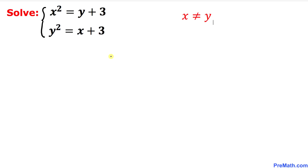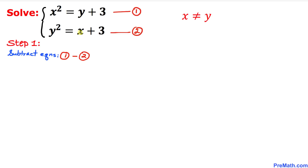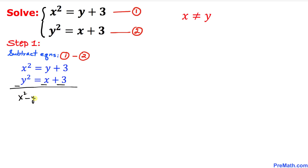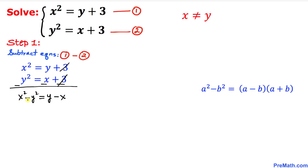Let's go ahead and get started with the solution. We'll call the first equation number one and the second equation number two. Let's go ahead and subtract equation two from equation one. Changing the sign, we get x squared minus y squared equal to y minus x. The positive 3 and negative 3 cancel. On the left hand side we have a difference of two squares, which factors as x minus y times x plus y.